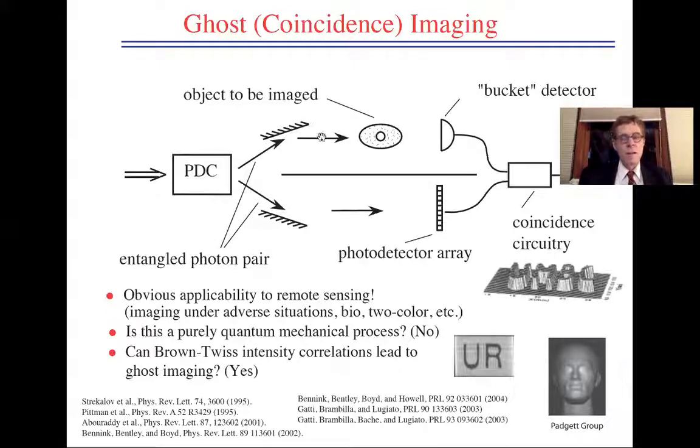One photon interrogates some object. If the photon gets transmitted through the object, it hits what we call a bucket detector. There is no spatial resolution on this detector. The detector either goes click or doesn't go click depending on whether this photon made it to the detector or did not. Down here, we have a photodetector array. And we allow this photon to fall into the array. Since the two photons are entangled, the position of this photon tells us what part of the object up here was interrogated. And it works.